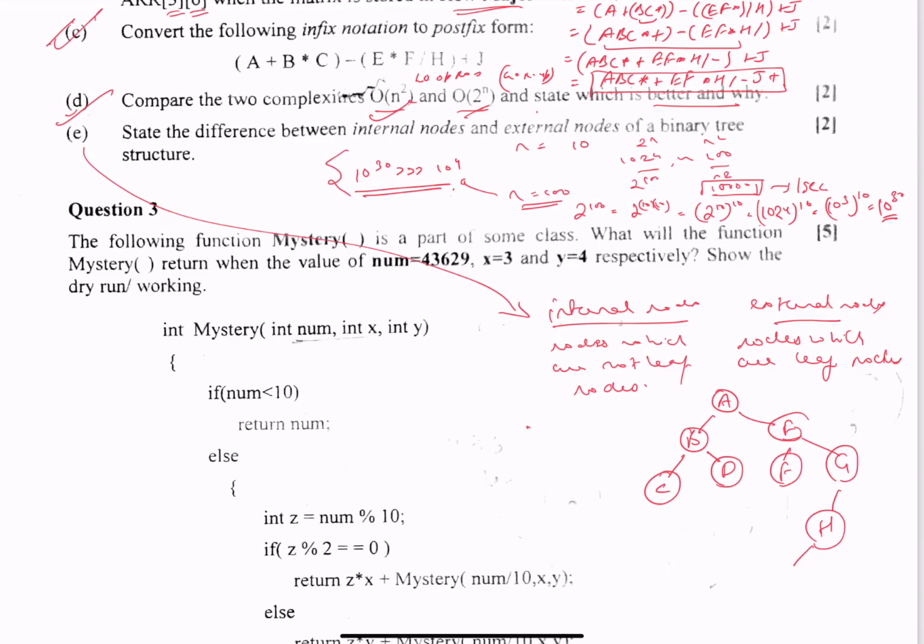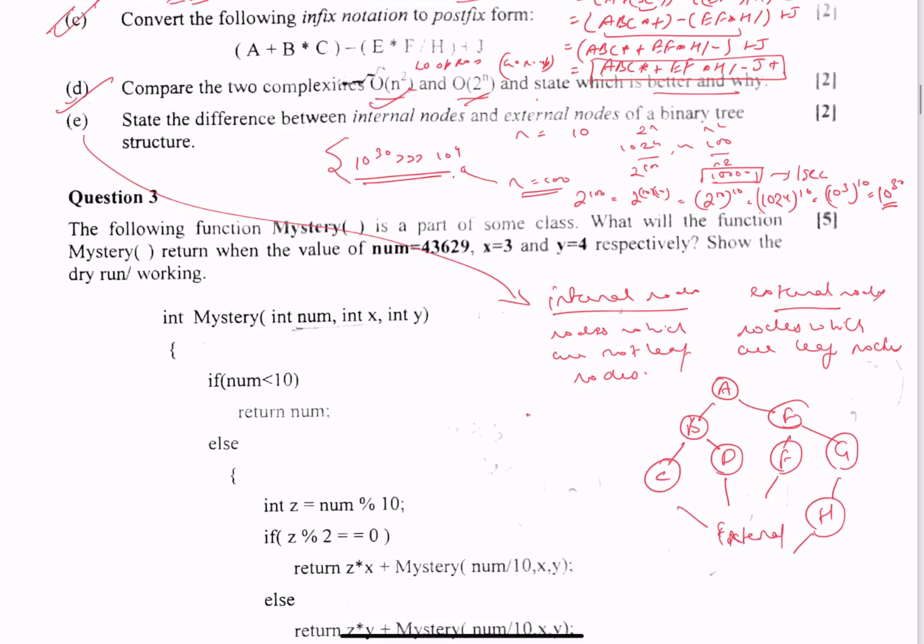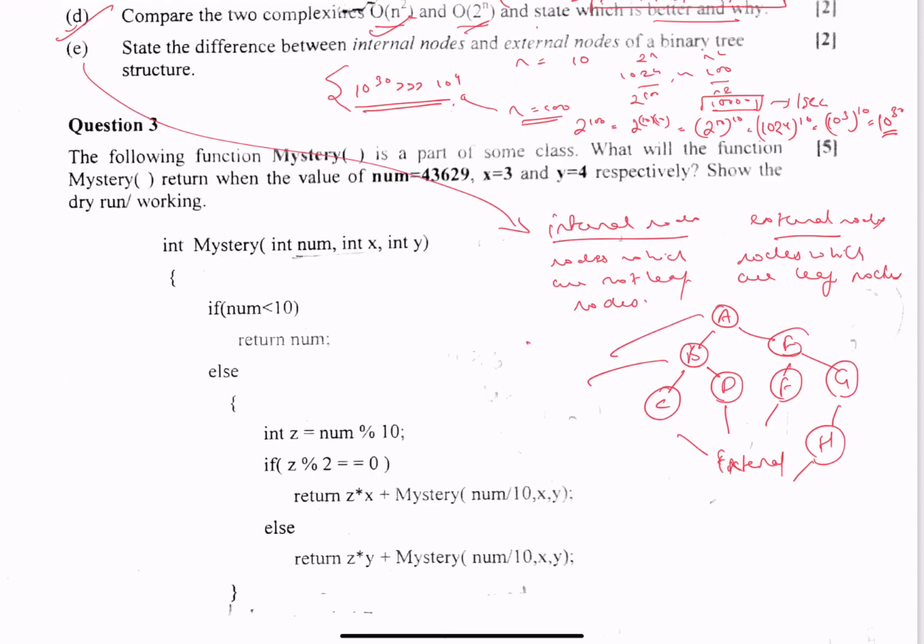So H, F, D, C are external nodes, whereas B, A, E, and G are internal nodes.